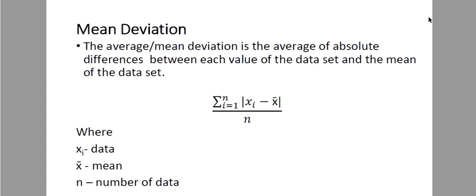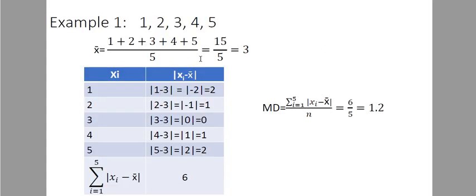Next is the mean deviation. The mean deviation or average deviation is the average of absolute differences between each value of the data set and the mean. We have the absolute value symbol, x sub i is our data, and x bar is our mean. For example, we have 1, 2, 3, 4, 5. To solve for the mean deviation, we need to compute first for the mean — 15 divided by 5 is 3.